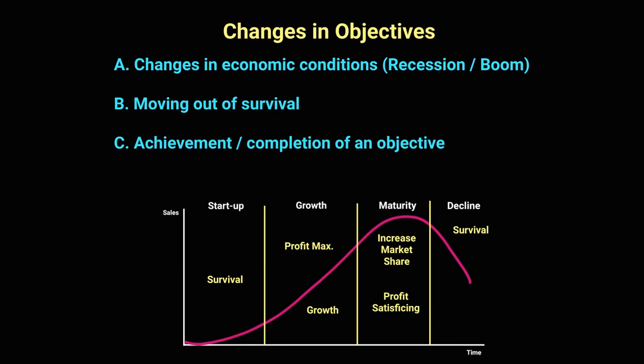So we've discussed a number of objectives a business would choose between — all cannot be implemented at the same time; it will be one or the other. Businesses go through different stages in their life, and at different stages different objectives are more suitable. In a recession, you survive; in a boom, go for growth or profit maximization. Most businesses will get out of their introduction and survival phase and then look to maximize and become bigger.